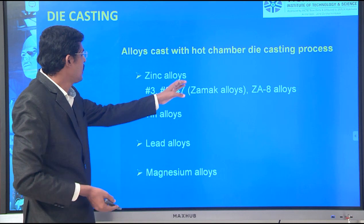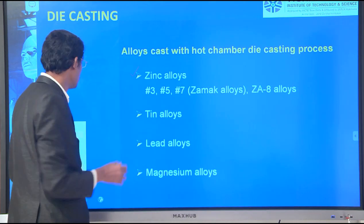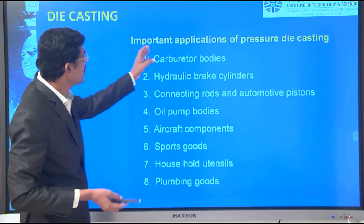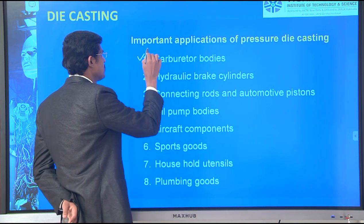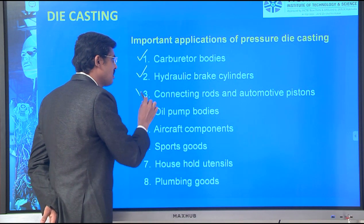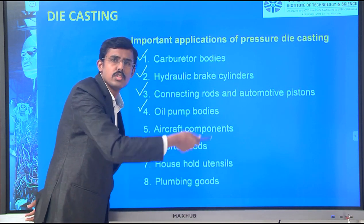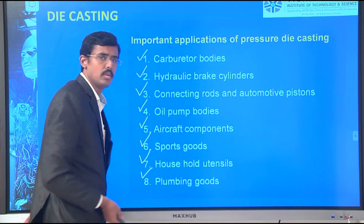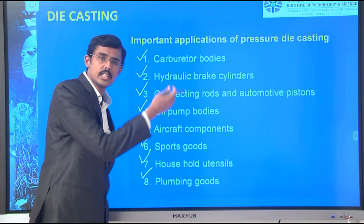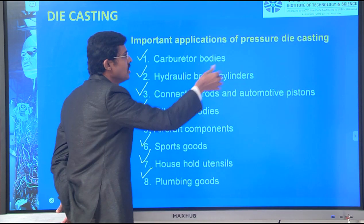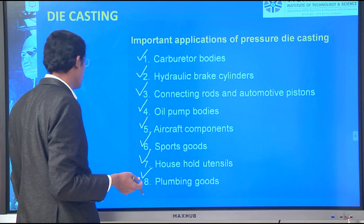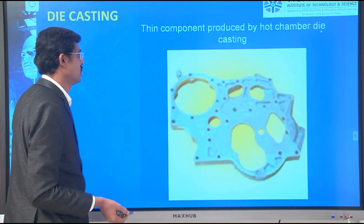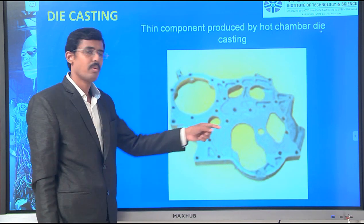The materials possible in hot chamber die casting include zinc alloys, tin alloys, lead alloys, magnesium alloys, and other alloy systems. Important applications of pressure die casting include carburetors, hydraulic brake cylinders, connection rods, oil pump bodies — mostly used in automobile industries. Aircraft components, sports goods, plumbing goods, boiler cylinders — every sector is touched. Hot chamber carburetor bodies are produced by this pressure die casting process. Very thin parts are also possible here because however small the gap in the die, pressure fills it.